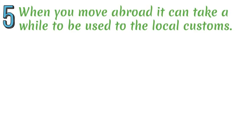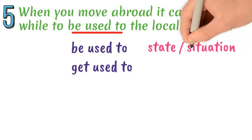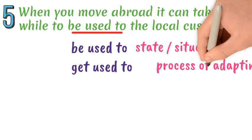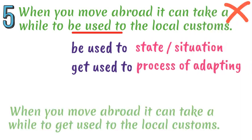Mistake number five. 'Be used to' something refers to the current state or situation of something, whereas 'get' or 'become used to' something refers to the process of adapting to something. For example: 'When you move abroad, it can take a while to get used to the local customs.'